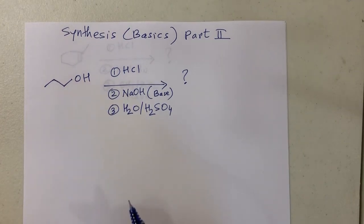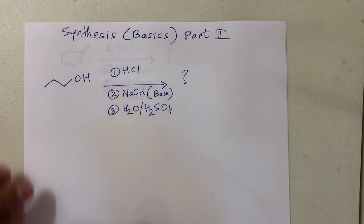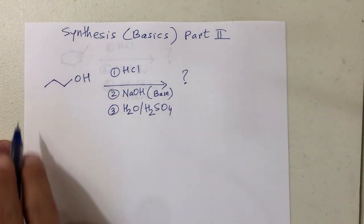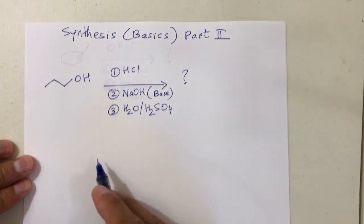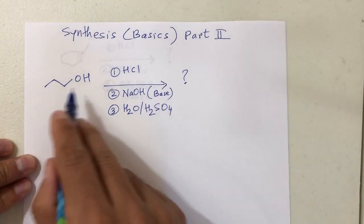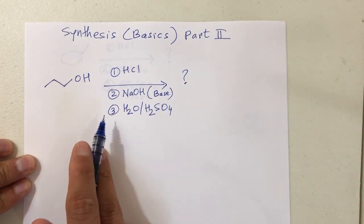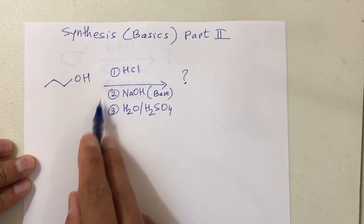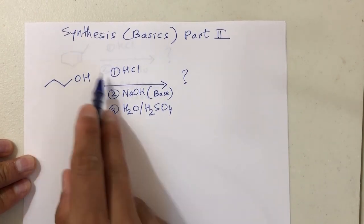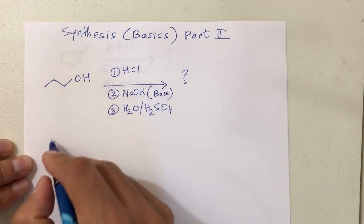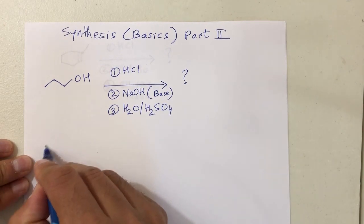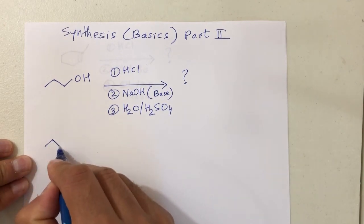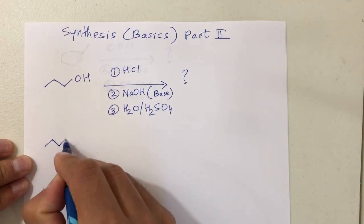Let's look at some more examples on synthesis. So this is our normal synthesis here. The moment you see a normal synthesis, the first thing I will do is split it. The best way to split it is write down the individual reactions.